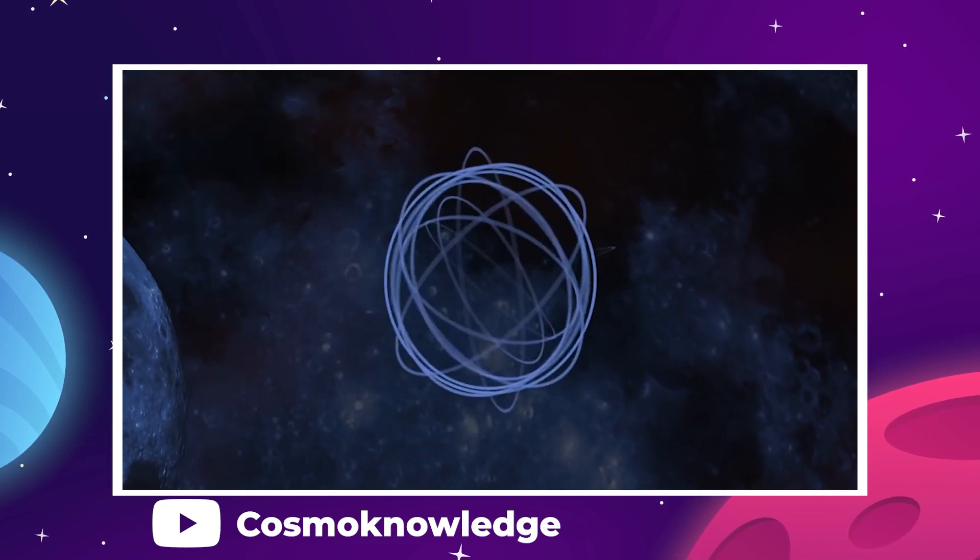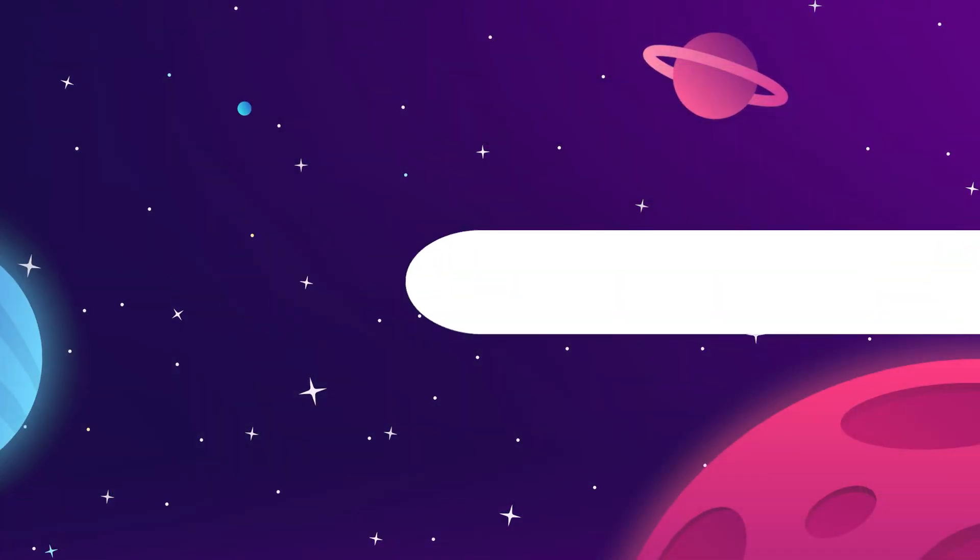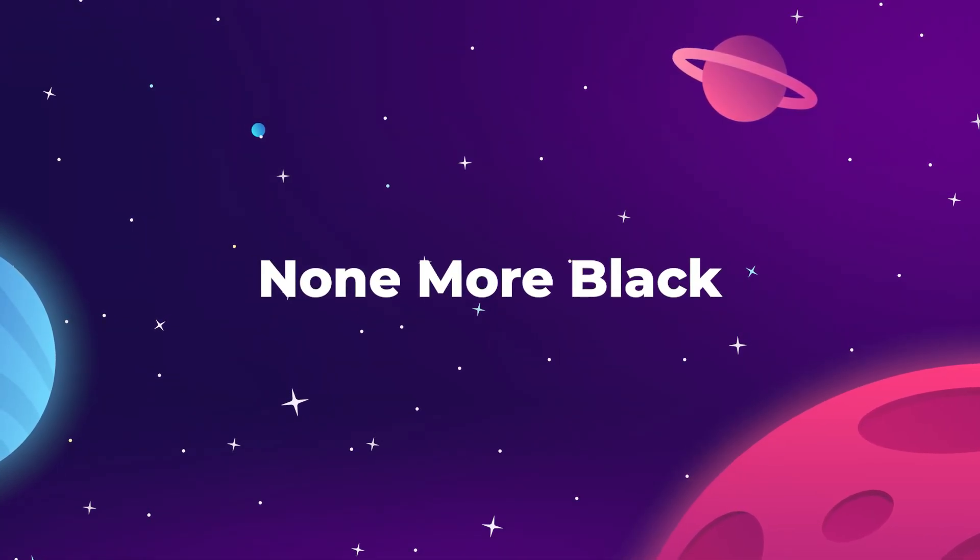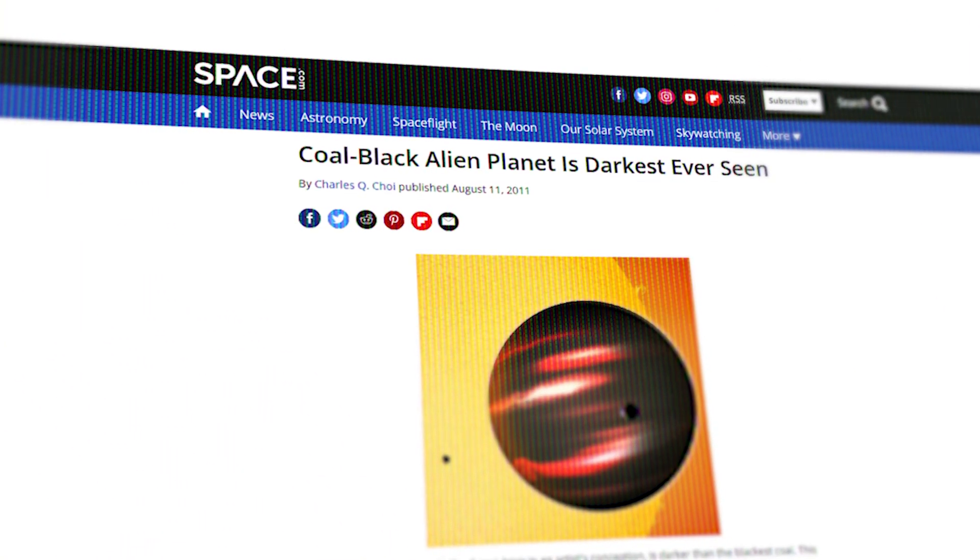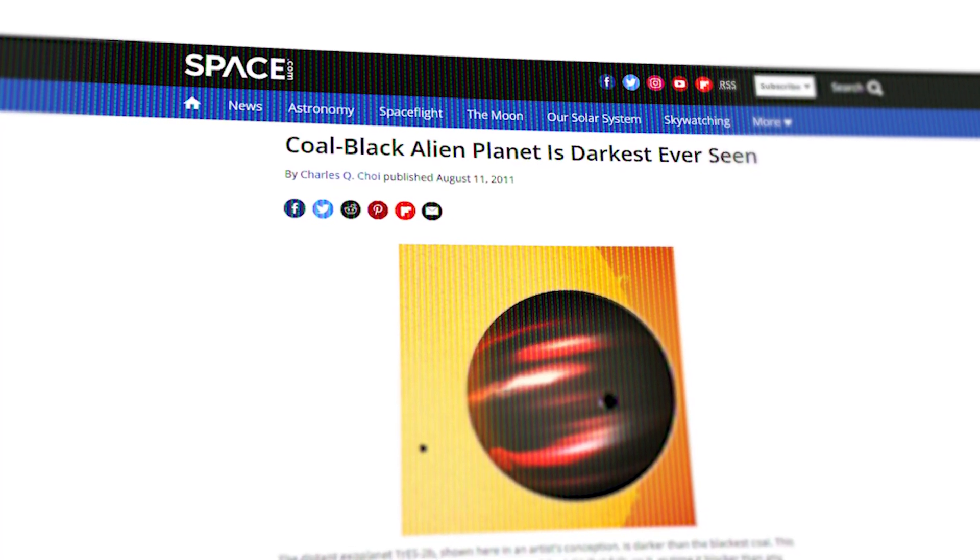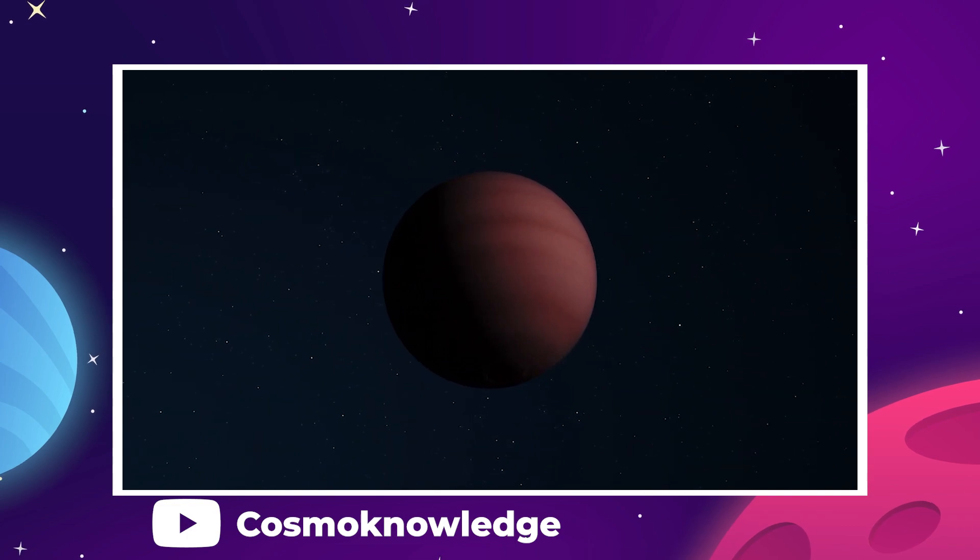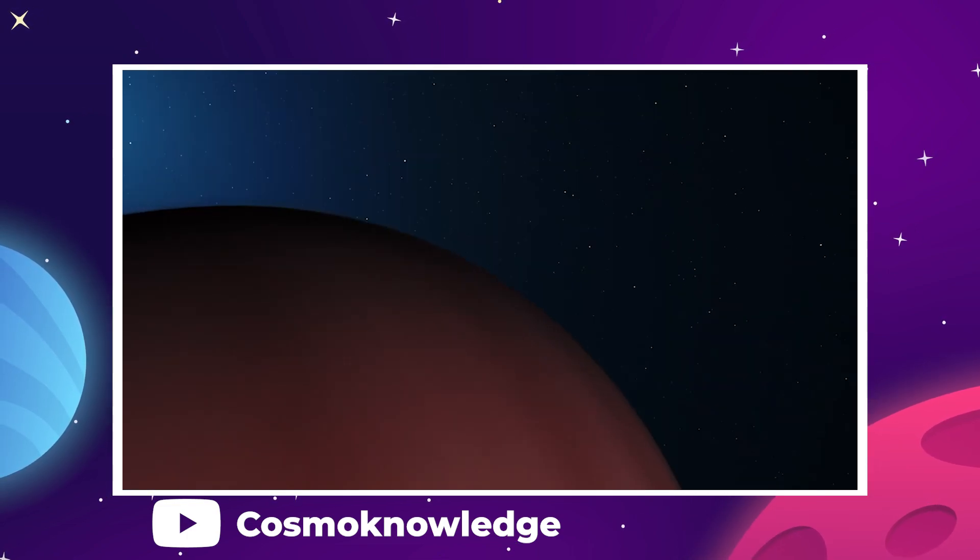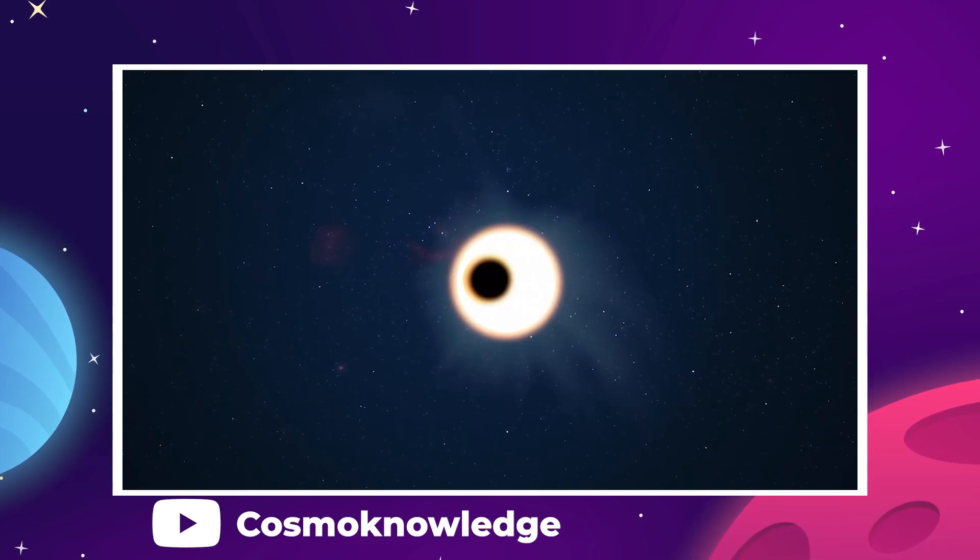The only thing blacker than Spinal Tap's album cover is Exoplanet TRES-2b. This gas giant planet reflects less than 1% of the light from its host star, making it blacker than the blackest acrylic paint, blacker than coal, second only to a literal black hole, from which zero light can escape.